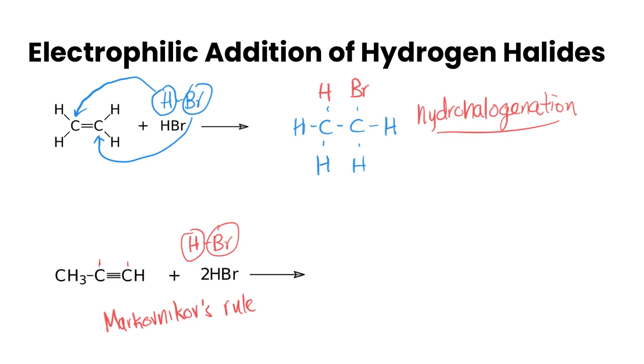If we take a look at these two carbons, this first carbon is attached to one hydrogen and the triple bonded carbon, whereas this carbon is attached to a methyl group and a triple bonded carbon. So this is attached to one hydrogen and this one is attached to zero hydrogens. The bromine is going to attach to the carbon with less hydrogens and the hydrogen is going to attach to the carbon with more.